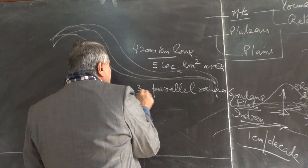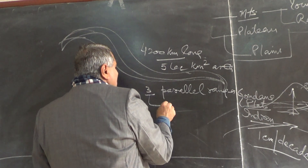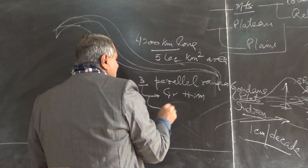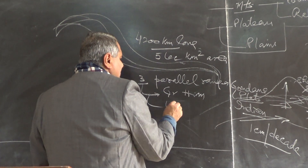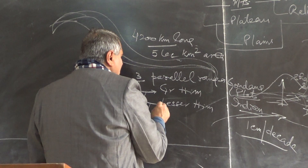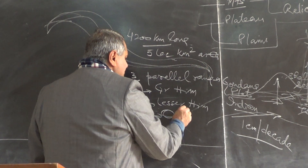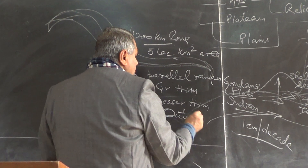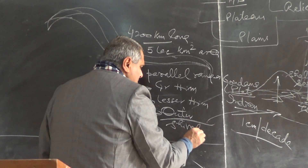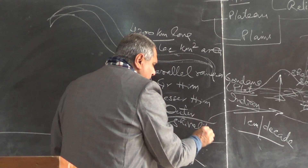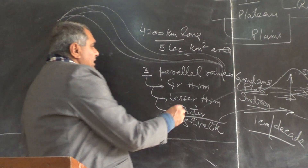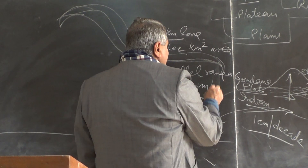Which three ranges? The Greater Himalaya, the Lesser Himalaya, and the Outer Himalaya. Outer means Siwalik. Lesser means Middle Himalaya. Greater is also known simply as the Himalaya.